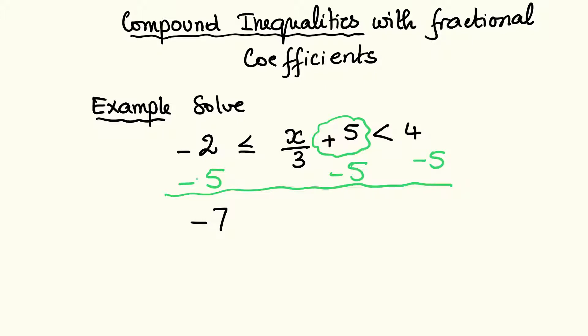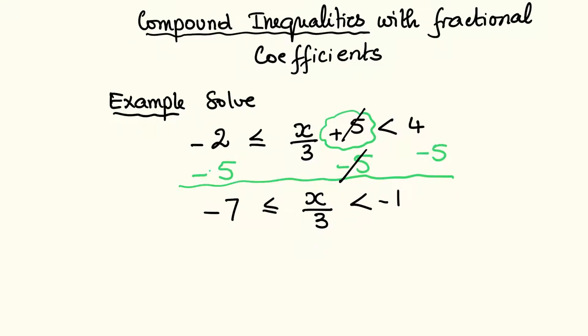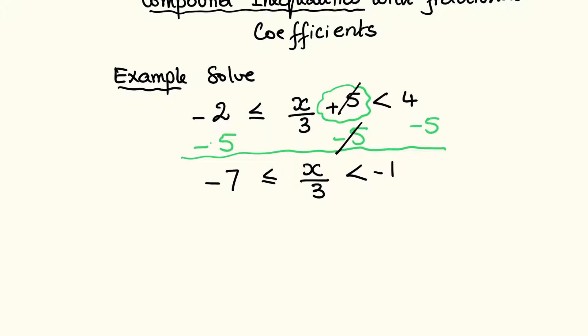-7 ≤, and 5 - 5 is 0 so we get x/3, and on the right hand side 4 - 5 which is -1. Now we want the x and we have x...